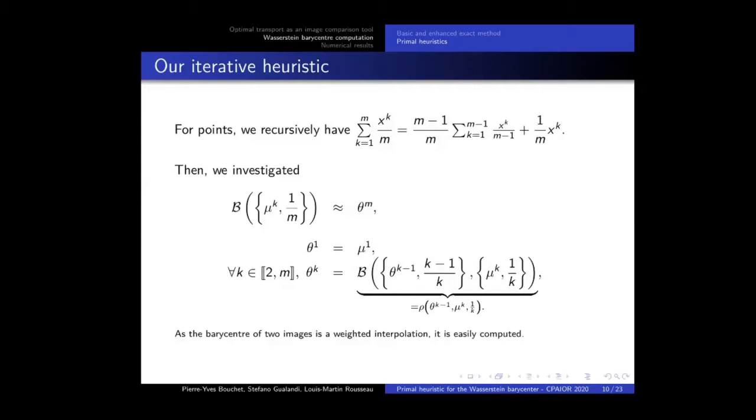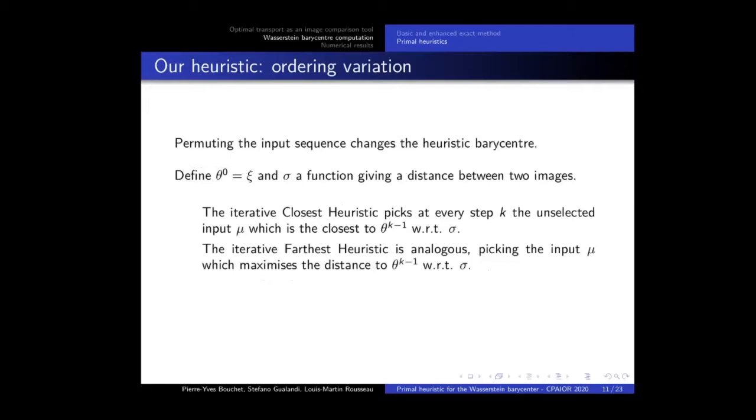So, if we repeat this process until k equal m, we obtain an approximation of the barycentre. There are some technical details using this heuristic, but notably, we notice that the input ordering has an impact. So, we tried some modifications. In the idea, at each iteration, we can pick the closest or farthest input to the current barycentre, and add it into what we obtain, into the approximation. So, this is the same idea with some variations.